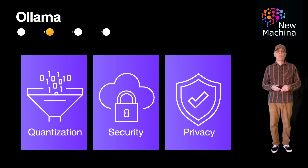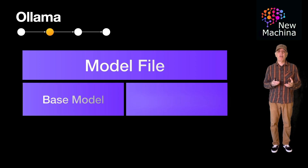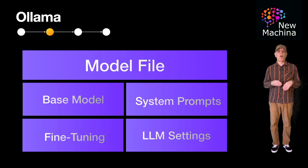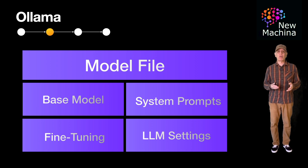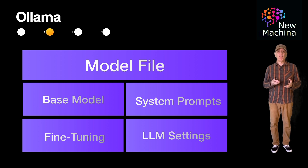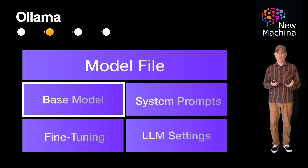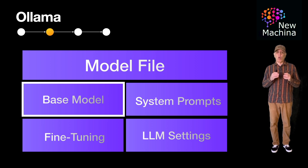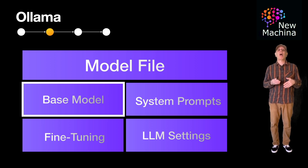System builders can customize models using a feature of Ollama called Model File. This is basically a text file that defines how the model should be built, customized, and configured. At a high level in the Model File, you can specify a base model, default system prompts, LoRA fine-tuning, along with other LLM settings.